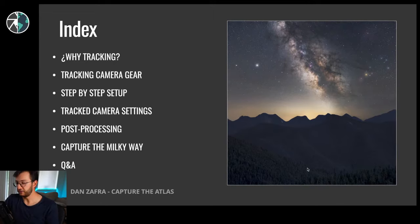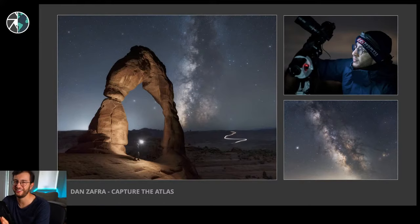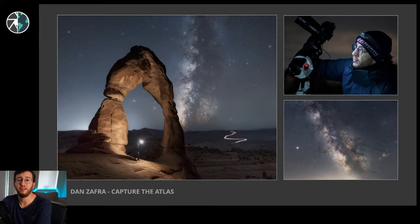First of all, many of you are coming from the community and know me, but in case you don't: my name is Don Zafra. I'm a professional astrophotographer and landscape photographer, originally from Spain, from Madrid - that's why you can guess my accent. I've been living in Pennsylvania, outside Philadelphia, for the last three years. My passion is doing landscape and astrophotography, and I've been doing Milky Way photography for many years. I share all this to help others improve their photography.